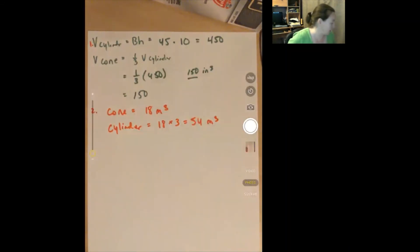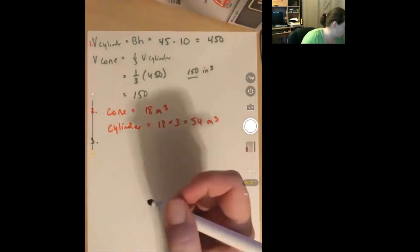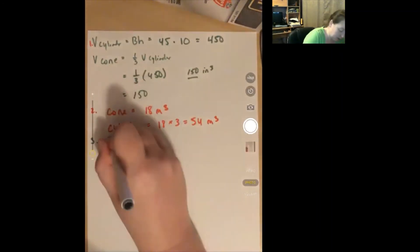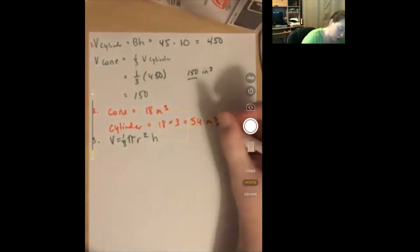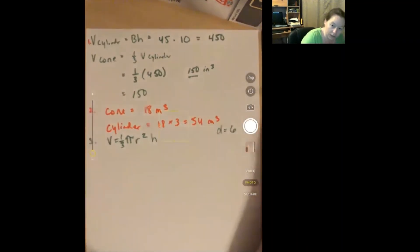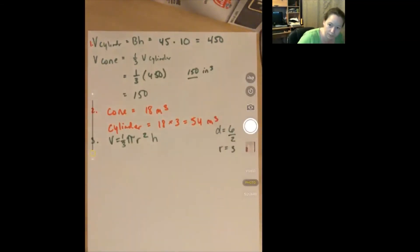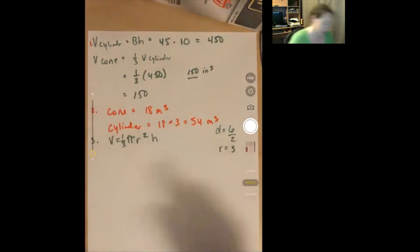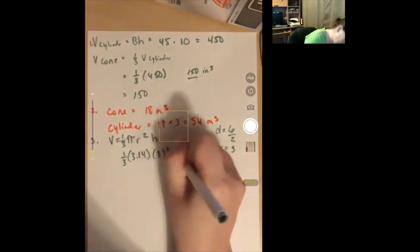Number three: find the volume of each cone. Volume equals one-third pi r squared h. The diameter is 6, so the radius is 6 divided by 2, which is 3. Every time you're given a diameter and want the radius, divide by 2. So: one-third times 3.14 times 3 squared times 7 (the height). Three squared is 9.